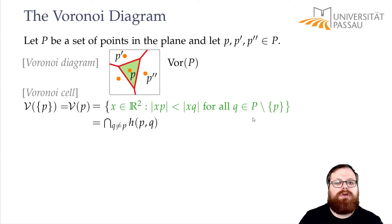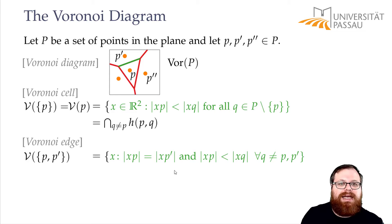What about a Voronoi edge? One part of the boundary here. We have to define it by two points. This is an edge between the Voronoi cell of P and the Voronoi cell of P'. This is exactly the points that have the same distance to P and P', but also there is no other point that is closer.